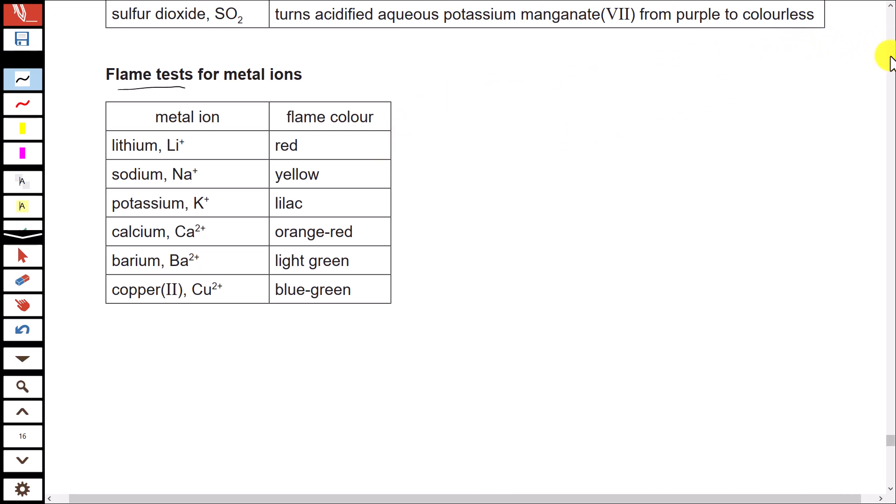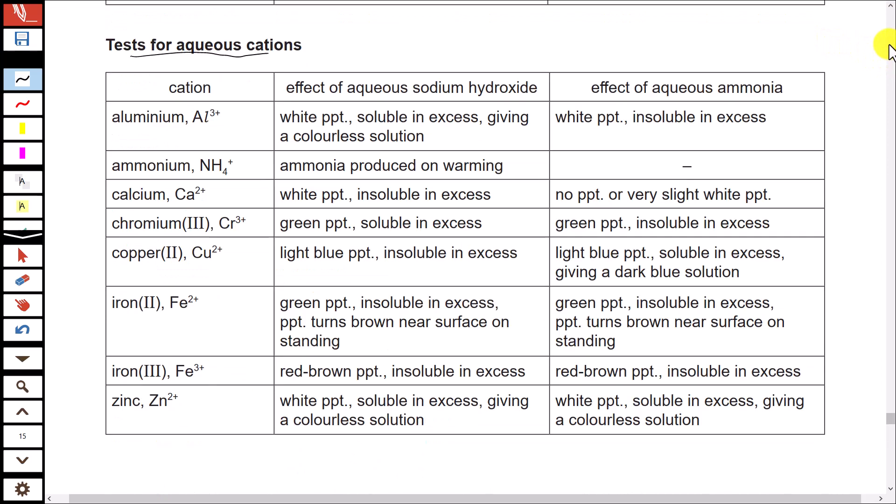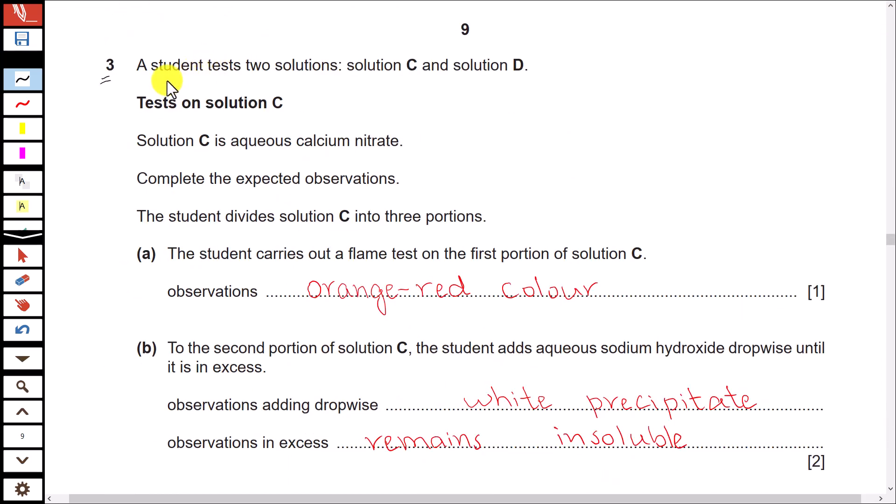Okay, now back to the question. A student tests two solutions: solution C and solution D. Tests on solution C. Solution C is aqueous calcium nitrate, means we have calcium ions and nitrate ions in this solution.